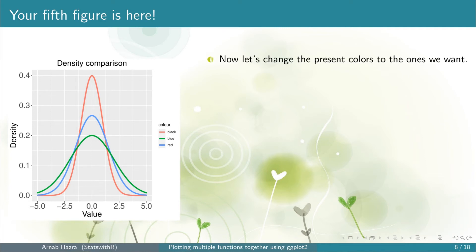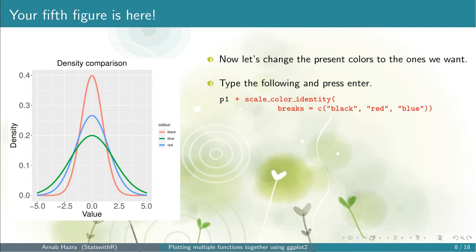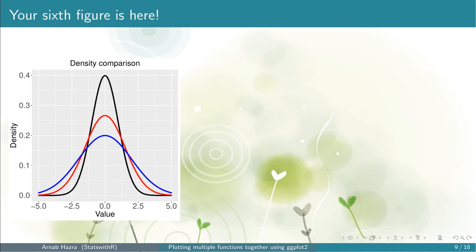Note that the colors of the lines are not the colors we wanted. To fix this, add the line scale_color_identity(breaks = c('black', 'red', 'blue')). Even though the colors have changed to what we want, the legend has disappeared. If you want to add a description about the different functions within the caption, you do not need a legend and you might consider this plot for your manuscript. If you want a customized legend, let's move on.